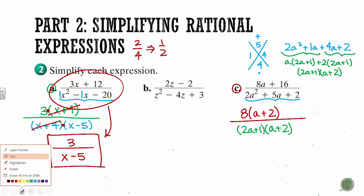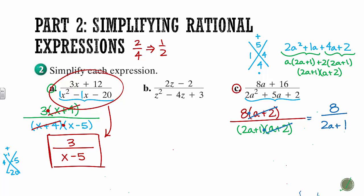So this factors into a (2a+1) times (a+2). And now that everything is being multiplied here, I can cross off anything that they have in common. And since top and bottom both have an (a+2), this simplifies to 8/(2a+1). And that's it. Box it up.